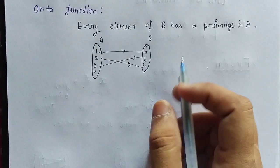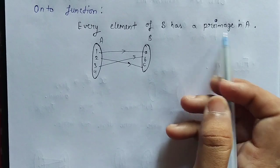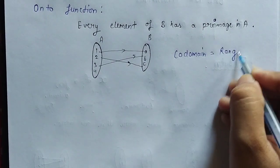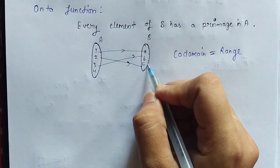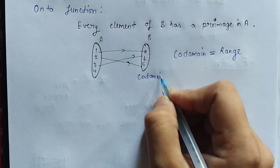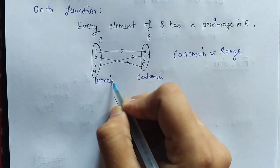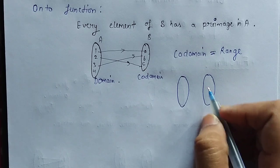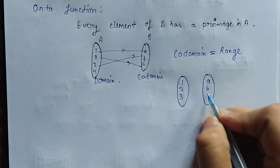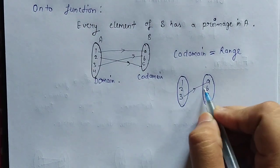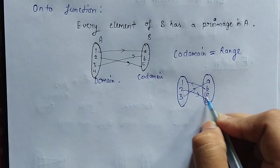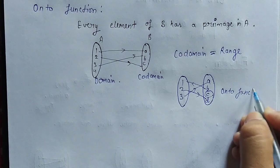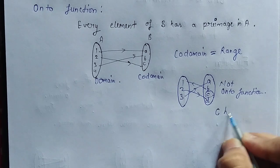Now what is an onto function? In an onto function, every element of B has a pre-image in A. Also, co-domain is equal to range for it to be an onto function. Each and every element of the co-domain must have a pre-image in the domain. For example, consider 1, 2, 3 in the domain and A, B, C, D in the co-domain. Here 3 maps to A, 1 maps to B, 2 maps to D, and C is left out — C has no pre-image in the domain, so it cannot be an onto function.